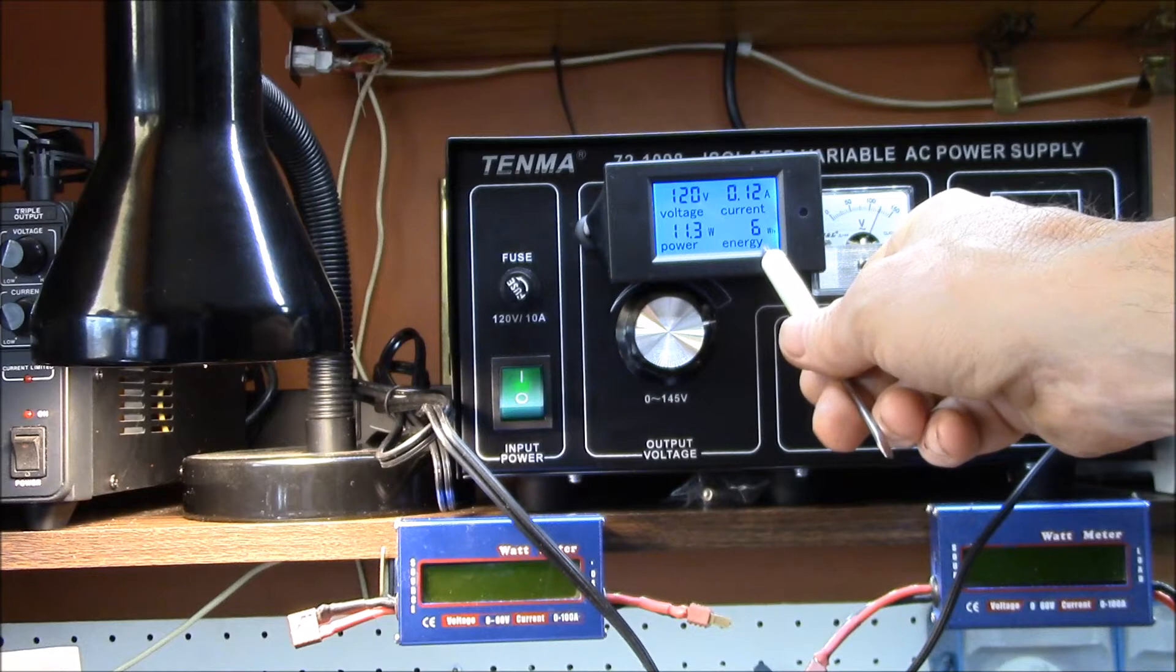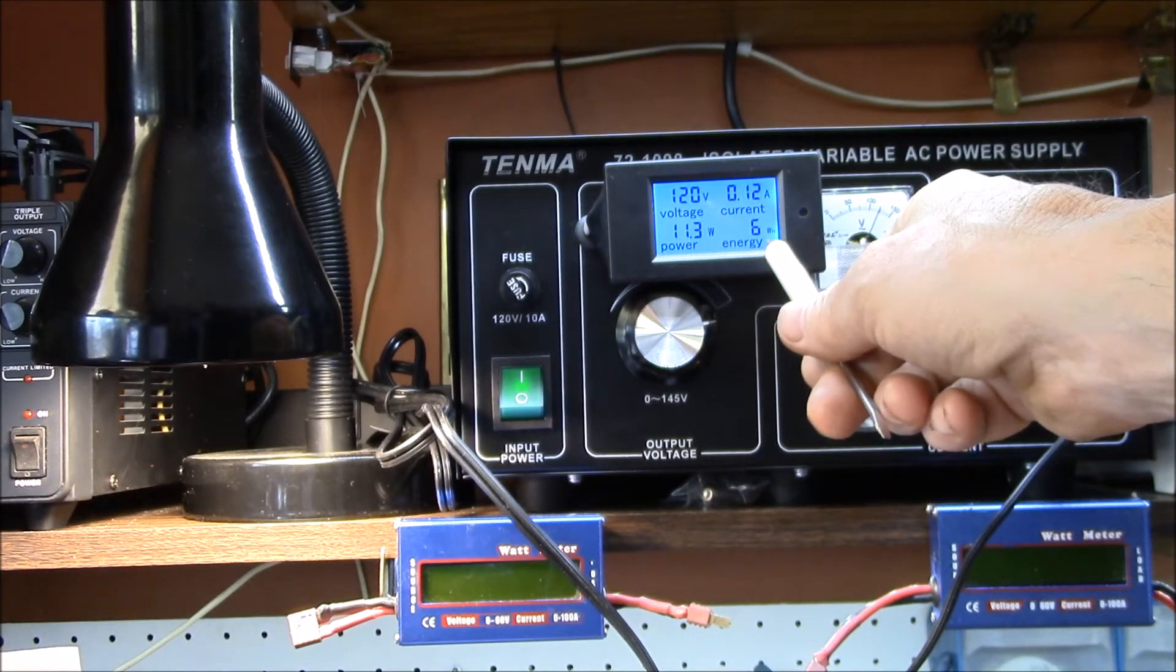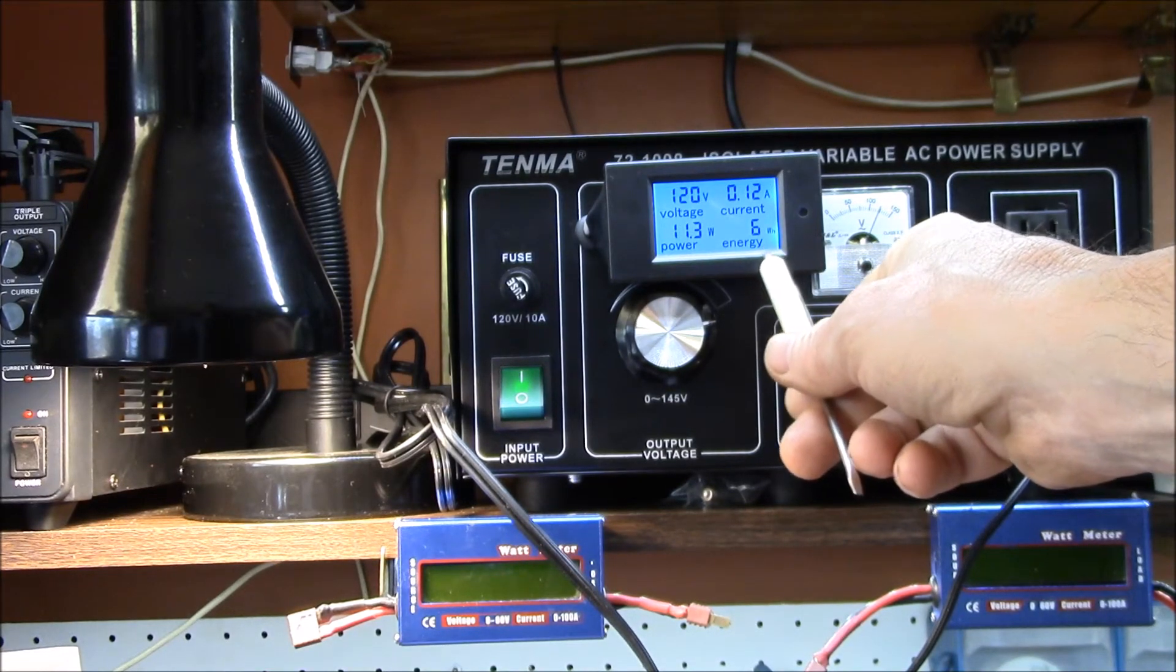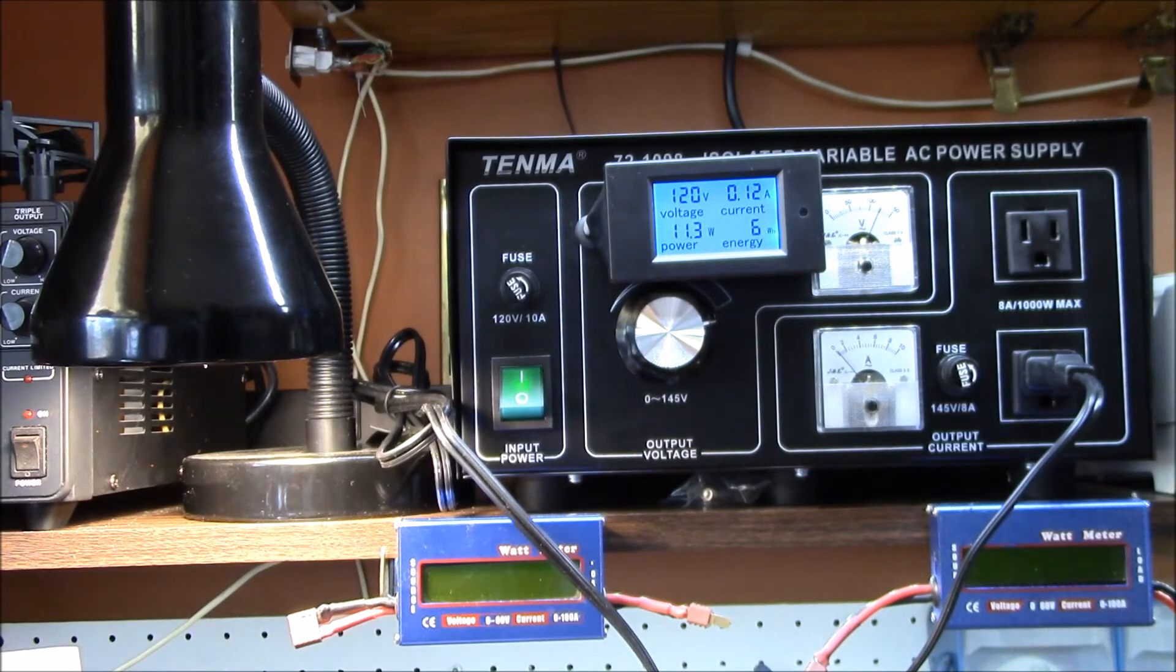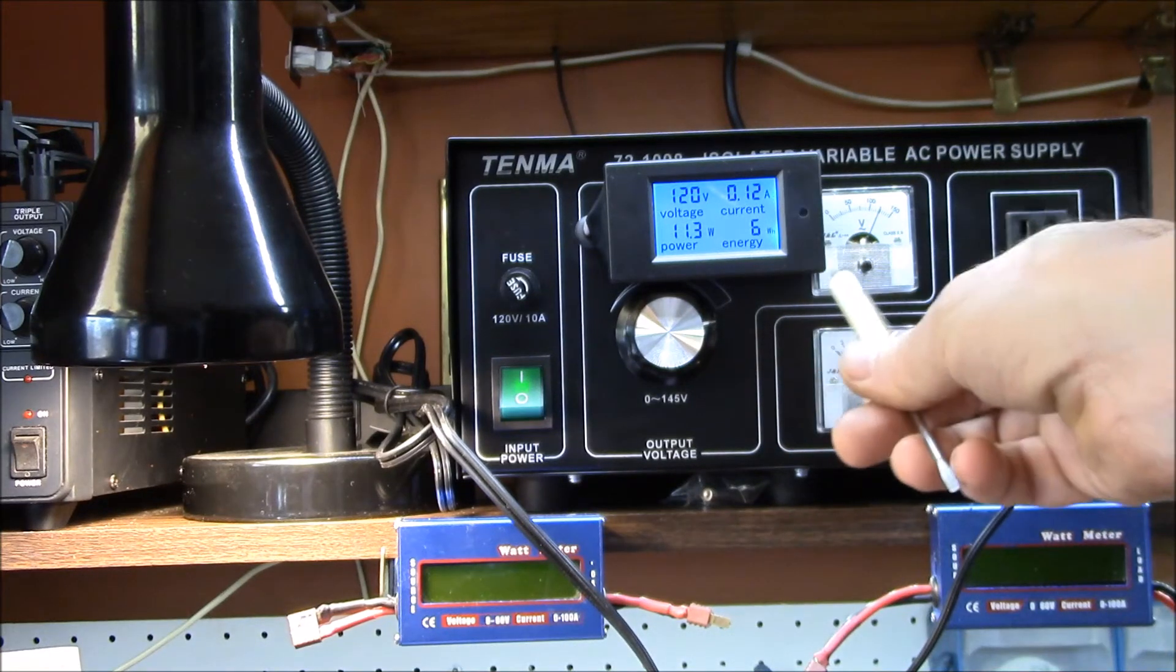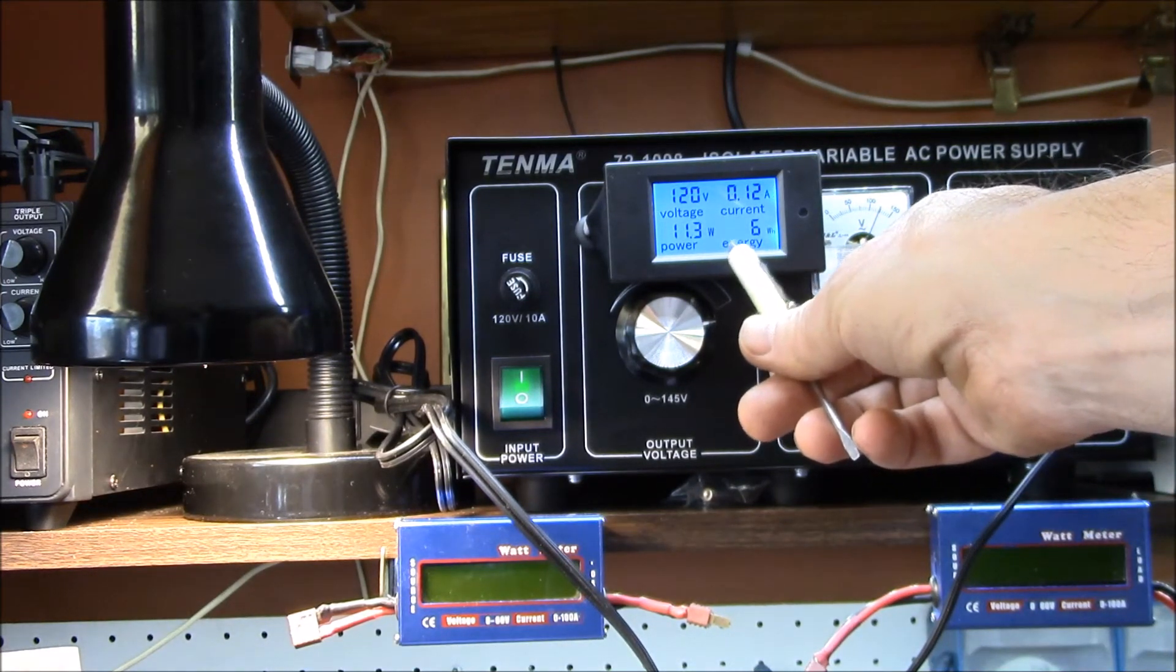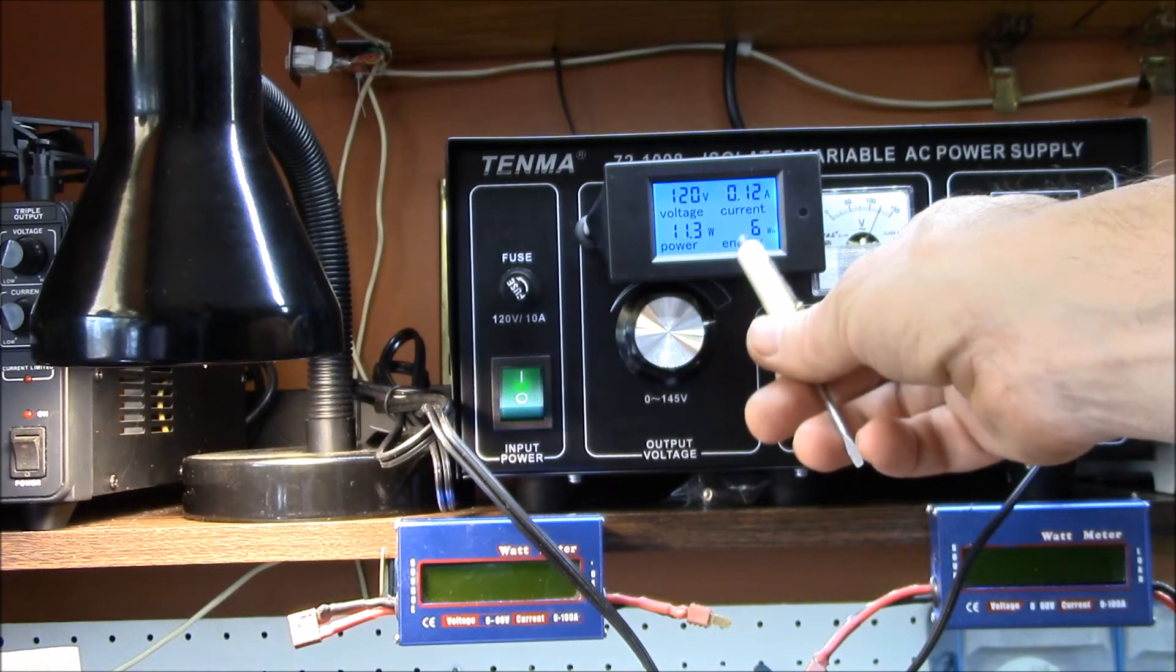Now the last setting, you can see here I've got six watt hours accumulated. This meter is kind of nice: it reads watt hours up until it hits 10,000 watt hours, then it switches to kilowatt hours and will read every kilowatt hour up to 10,000 kilowatt hours.